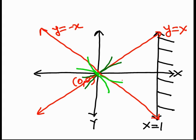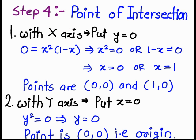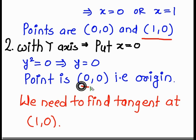Now next step. In step number 4, we find the point of intersection with the x-axis and y-axis. For x-axis, we get 1, 0 and for y-axis, we get origin.